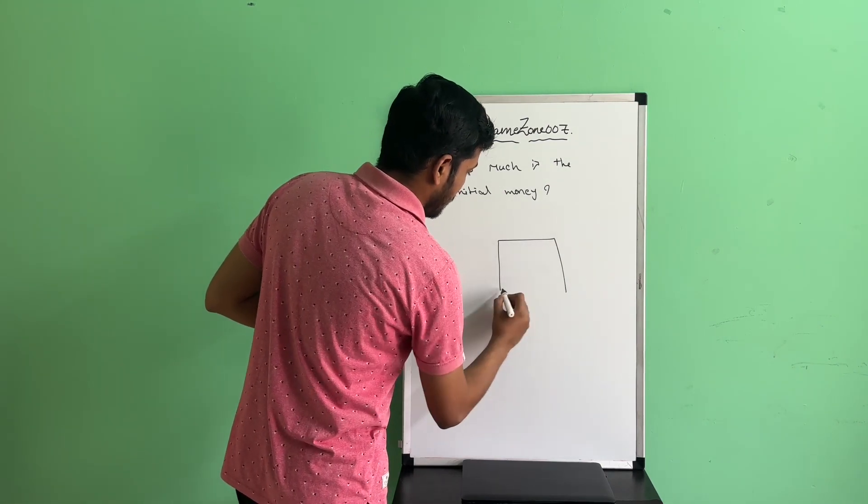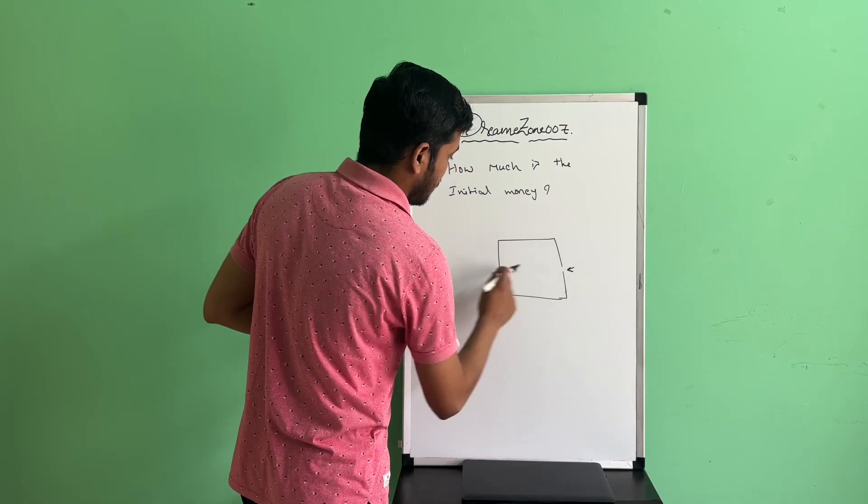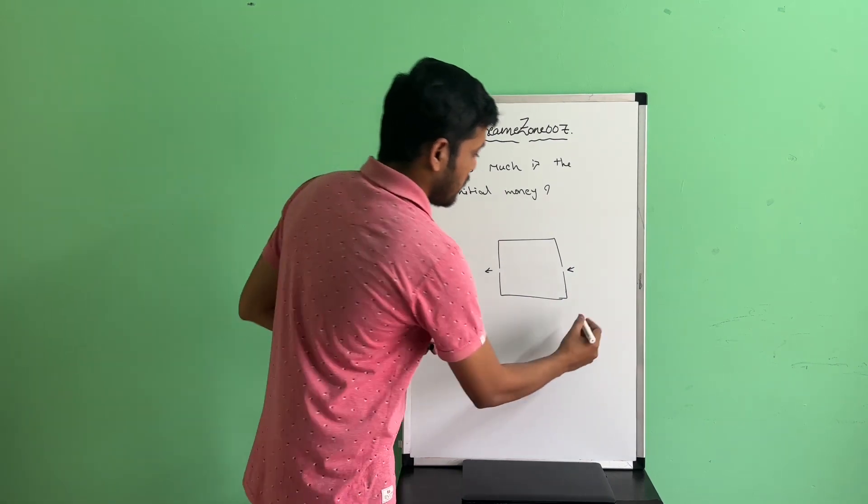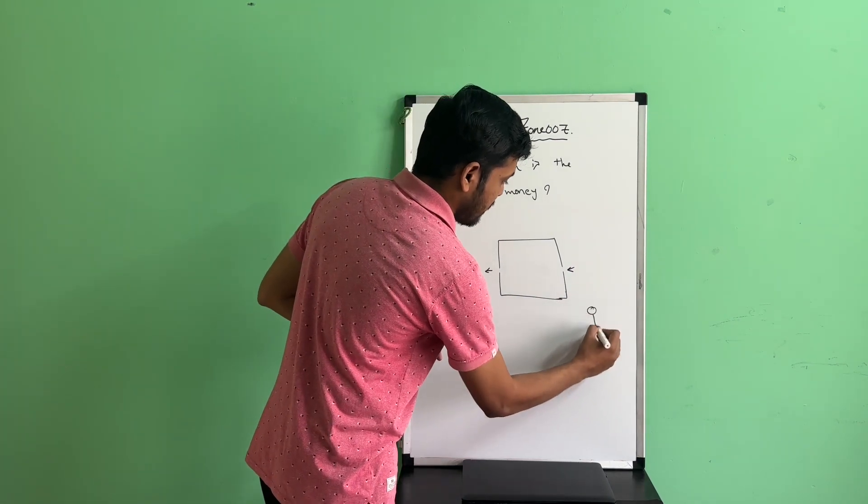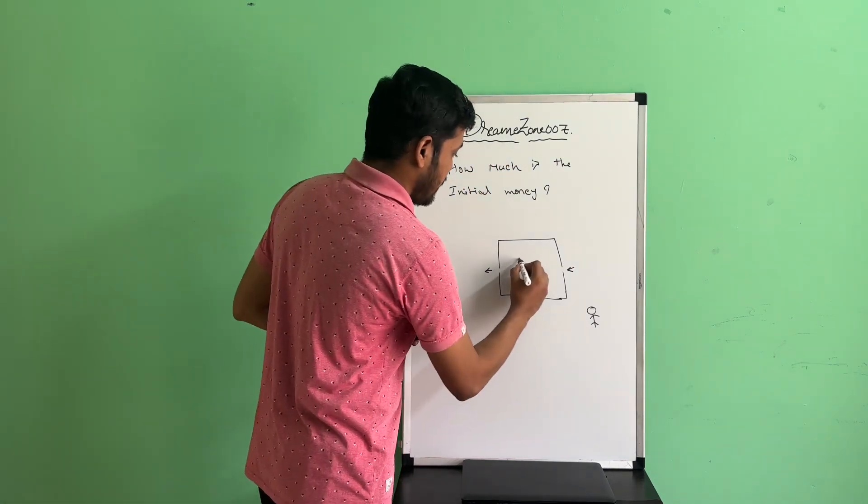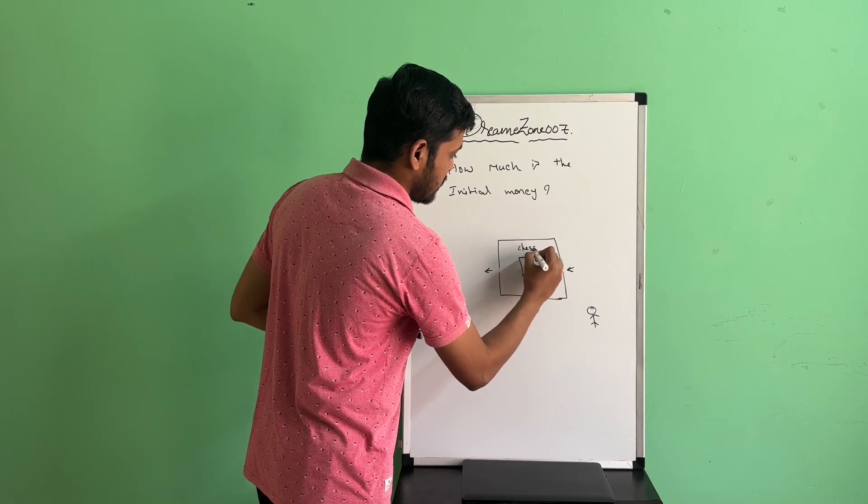There is an auditorium which has one entry and one exit. So there is a one-way system. He has some money, and we have one game inside the auditorium. Let's assume that game is a chess game.